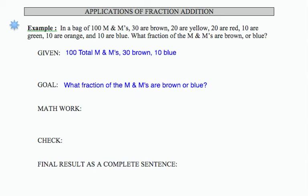Now, because we know the number of M&Ms that are brown and the number that are blue, we can set up a sum of fractions. So there's 30 brown out of 100 plus 10 blue out of 100.